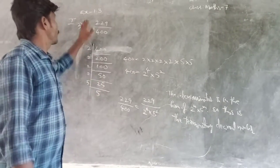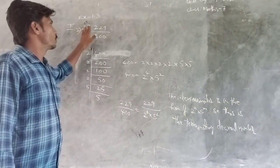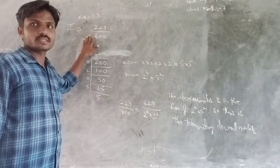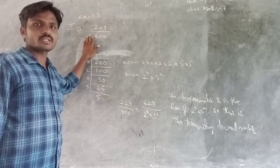Which problem now? I am explaining Exercise 1.3, first bit, second problem: 229 by 400. Whether it is a terminating or non-terminating decimal number, you have to check that one.